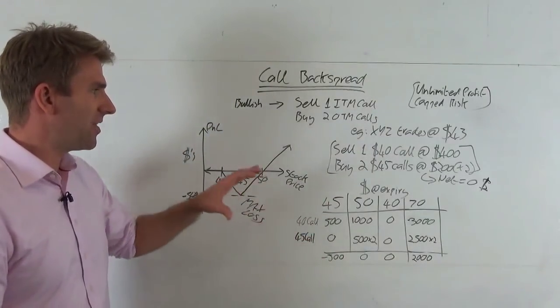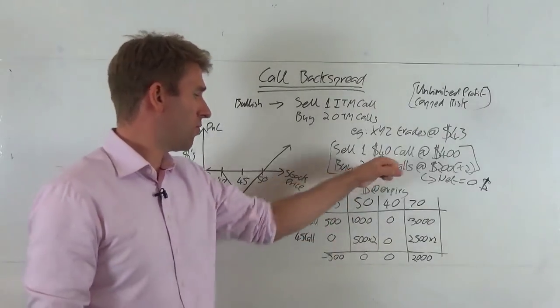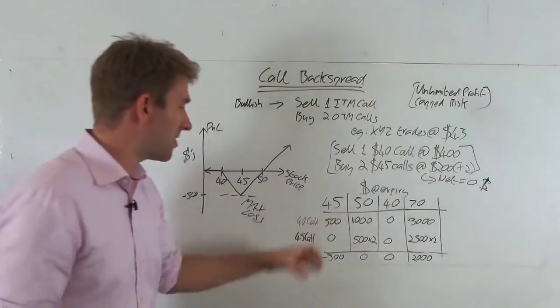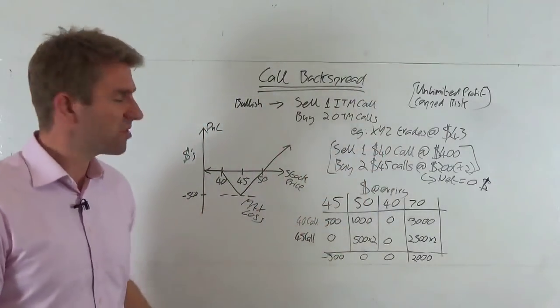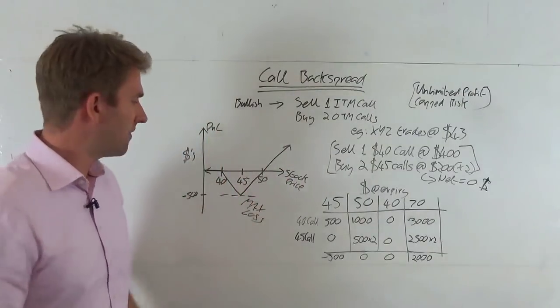But let's not forget that we've also lost the full amount of these two $45 calls we bought, $200 each, $400. So we lost the $400 plus the $100. We lost $500. That's a maximum loss we can take. And we can prove that by looking a little bit further.